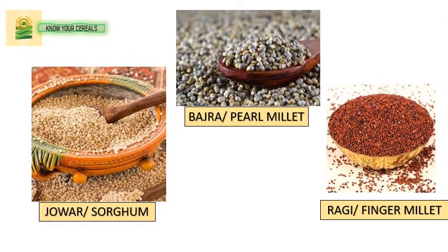We have other millets: bajra, which is also known as pearl millet; ragi, the finger millet — ragi is a very good source of calcium; and jowar. These are mainly used in western India, mainly in Rajasthan and Gujarat where these millets are very common. Wheat is also very common in Punjab. In eastern India — Bengal, Odisha and all — we prefer mostly rice and rice products.